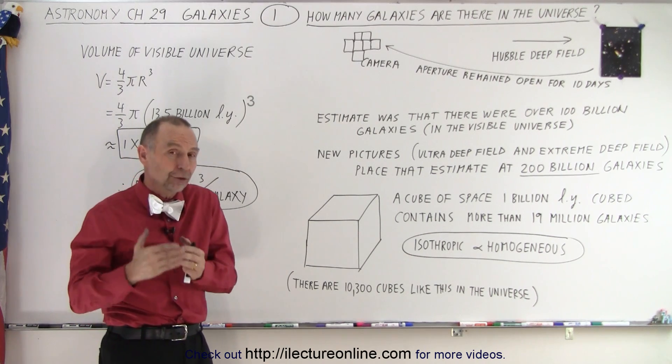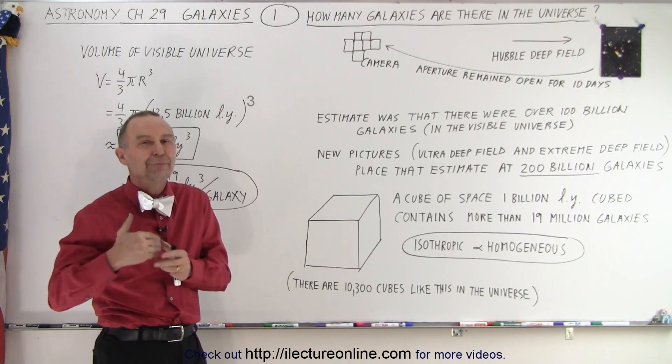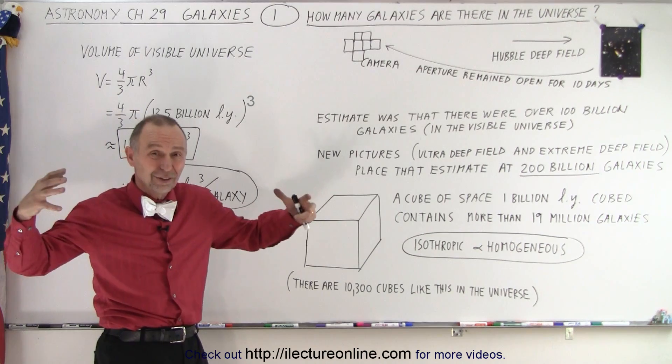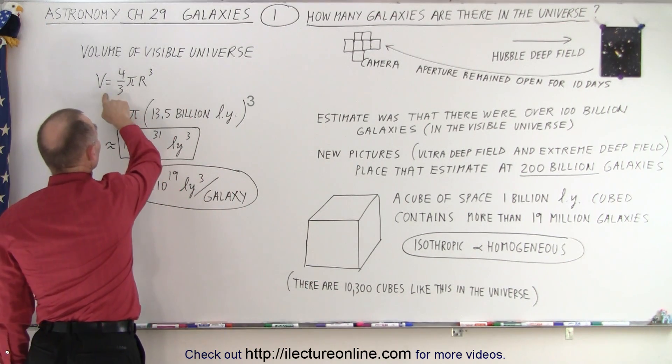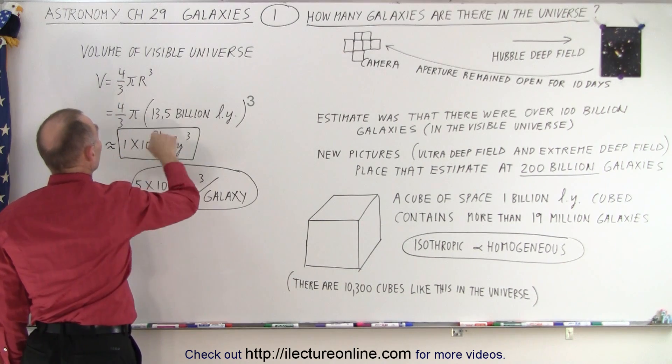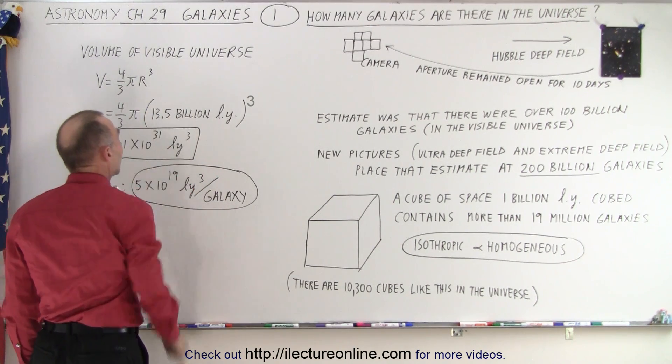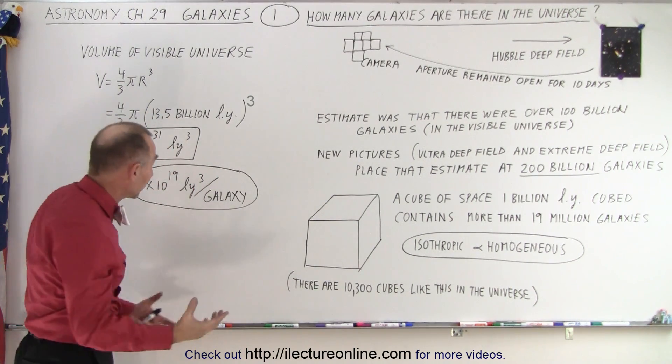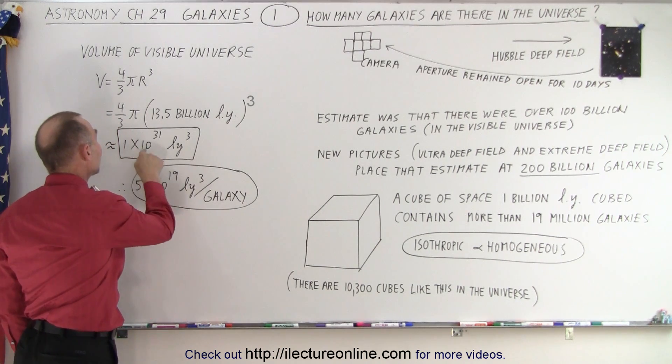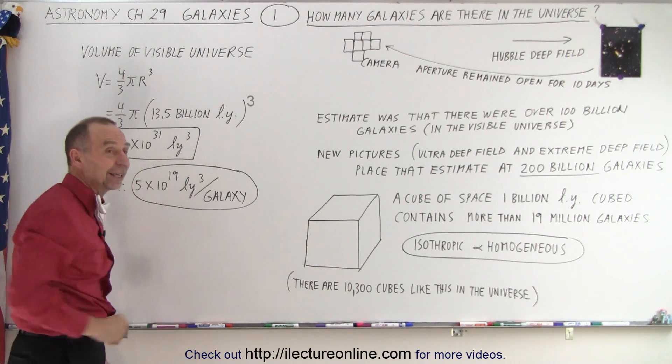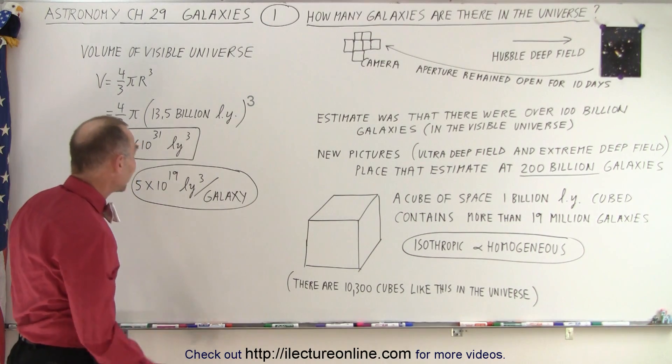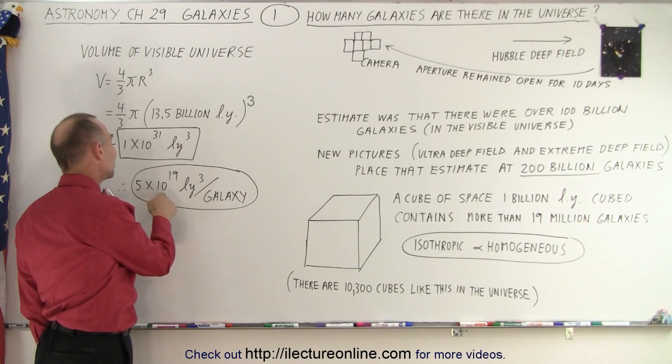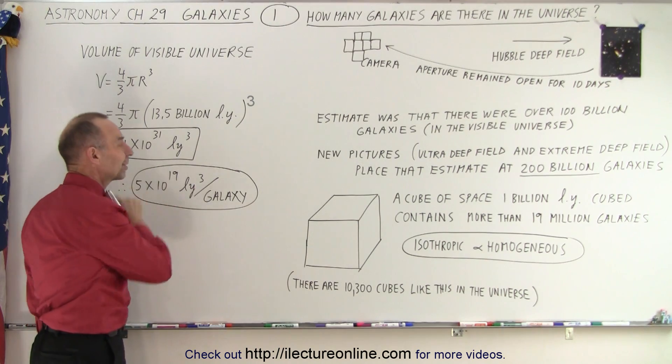Now the visible portion of the universe goes out to about 13.5 billion light years so how much space is that? Well, the volume of space, the volume of a sphere is 4/3 π r³ since r the radius is 13.5 billion light years when we calculate it, there's about 1 × 10³¹ cubic light years in the universe. And of course, that leaves us with about 5 × 10¹⁹ cubic light years per galaxy.